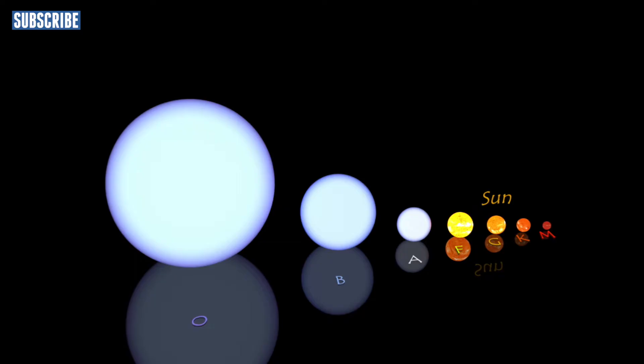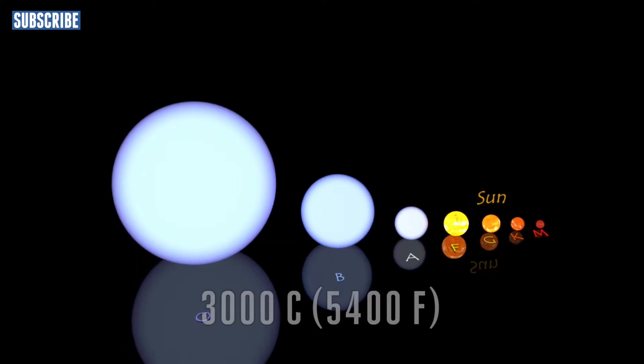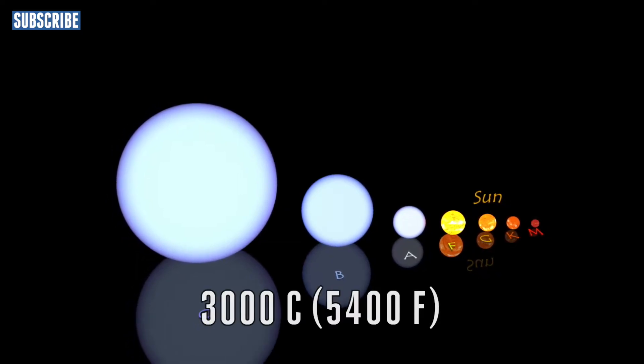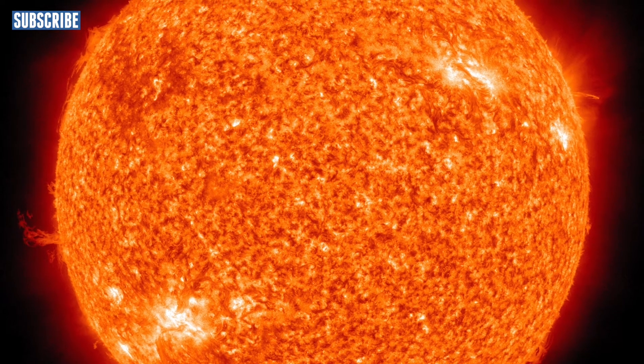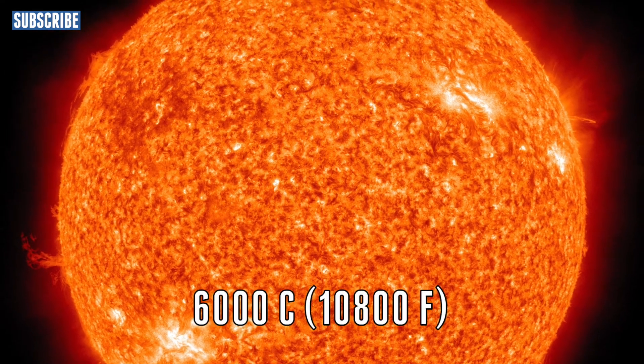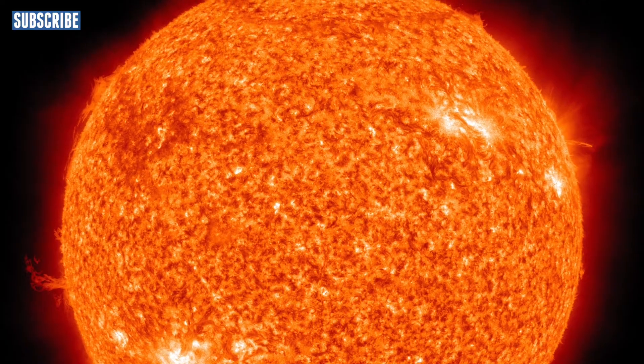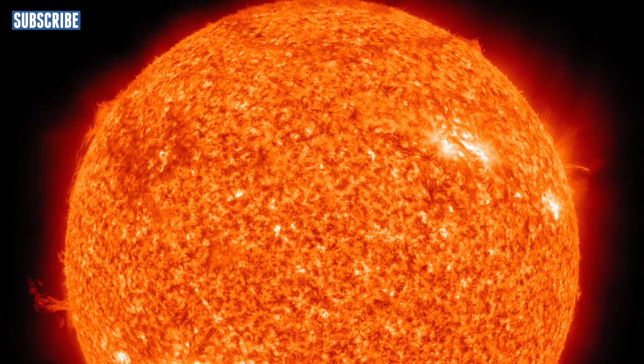The coolest stars are the red stars, and their temperature can be around 3000 degrees Celsius. Our own sun has a temperature of 6000 degrees Celsius and this has an orangey type yellow colour to it.